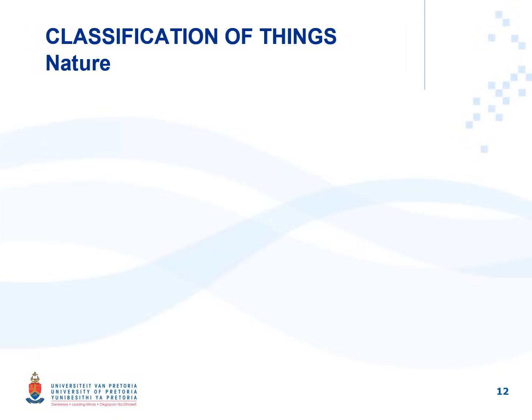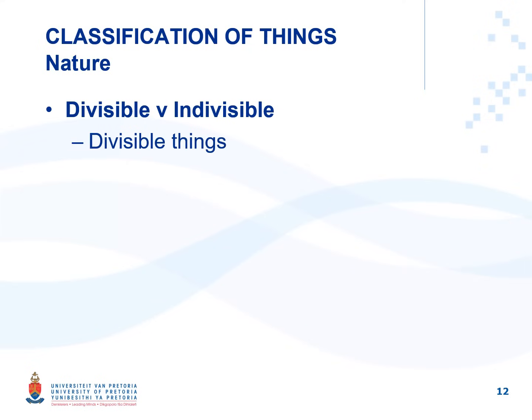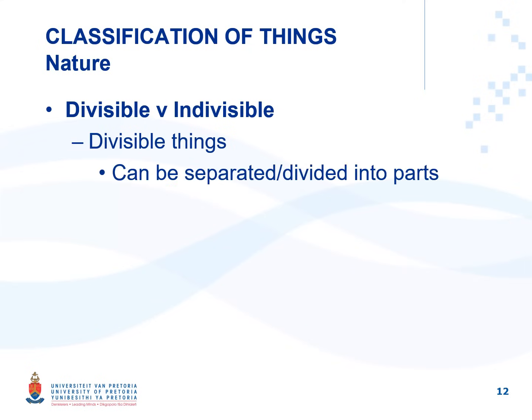Things can also be classified according to nature based on whether they are divisible or indivisible. Divisible things can be divided or separated into parts without changing the nature, function, or value of the thing. The nature, function, and value of a divisible thing remains the same in total if it is divided, and its constituent parts will equal the same in value if divided. The focus here is on determining legal divisibility, not physical divisibility.